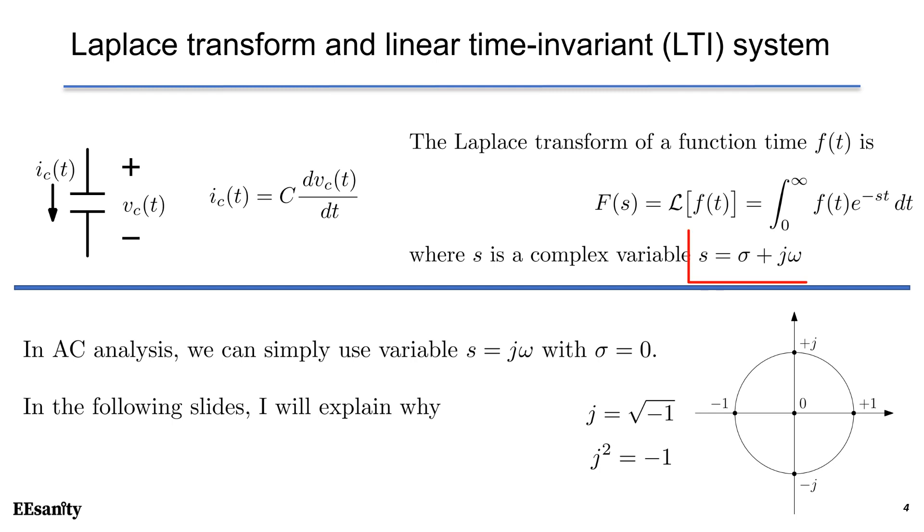The real part of a complex number s is sigma and the imaginary part is omega. Here, j is an imaginary unit equals to the square root of minus 1. In addition, we can express the complex number in a complex plane. If we draw a circle at the origin with magnitude of 1, there are two intersections at y-axis, which are plus j and minus j. In AC analysis, we can simply use s variable equals to j omega and set sigma as 0. I will explain why in these following slides.